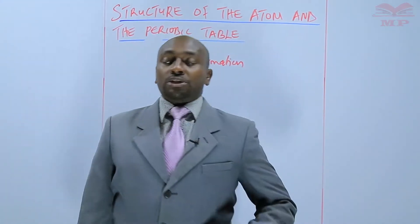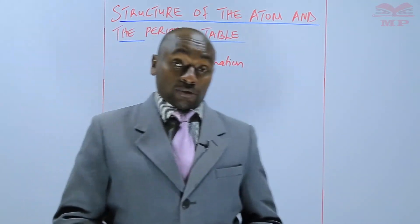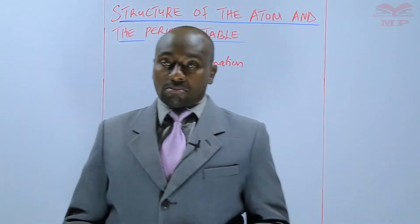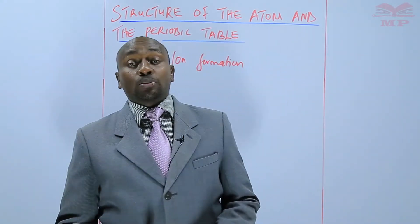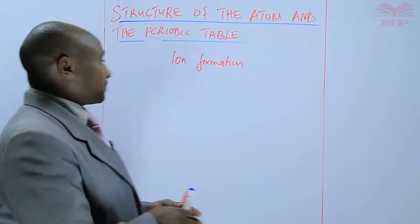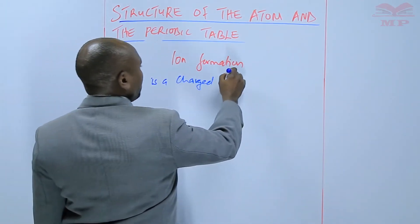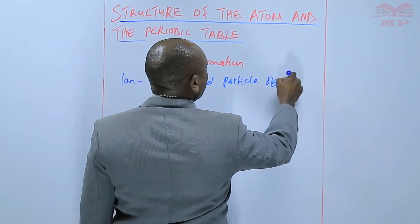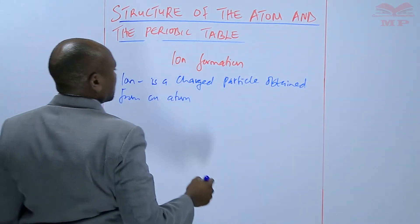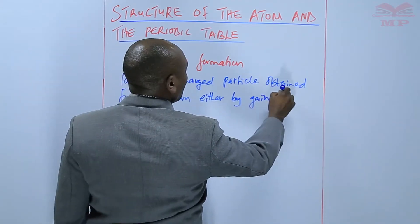Before we get into more details about ion formation, we know that an ion is a charged particle, and that charged particle is obtained from an atom. An ion can either have a positive charge or a negative charge. It is obtained from an atom either by gaining electrons or losing electrons.